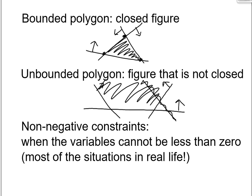Finally, one more definition is the non-negative constraint — when the variables cannot be less than zero, which applies in most real-life situations. For example, if x is time and y is the number of bags, then x must be greater or equal to zero, and the same with y, because both have to be positive numbers.